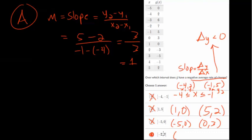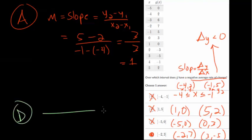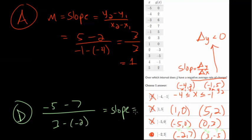Lastly, choice D — we know it's right by process of elimination, but let's confirm. At x equals negative 2, the y value is 7, and at x equals 3, the y value is negative 5. As x goes from negative 2 to 3 it increases by 5, while y goes from 7 to negative 5 — down 12 units. Using the formula: y2 minus y1 over x2 minus x1 gives us negative 5 minus 7 divided by 3 minus negative 2, which is negative 12 over 5. So the average rate of change is negative 12/5, confirming choice D is the correct answer.